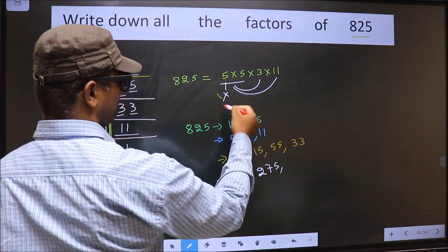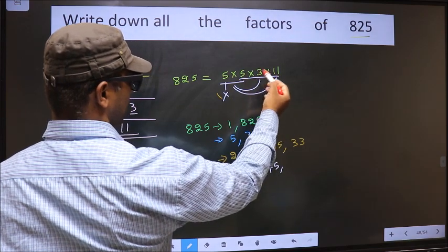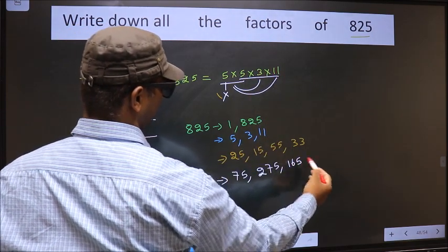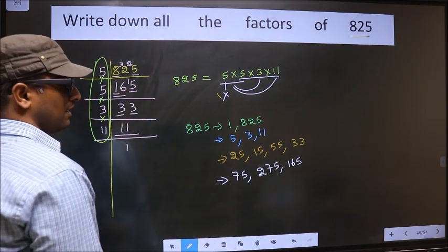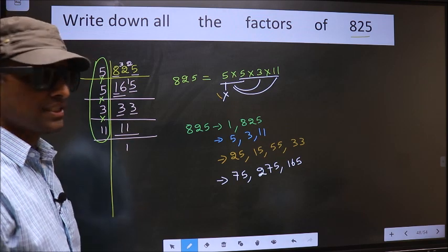Now leave this 5. Take these three numbers. 5 into 3, 15. 15 into 11, 165. Okay. No other combination possible.